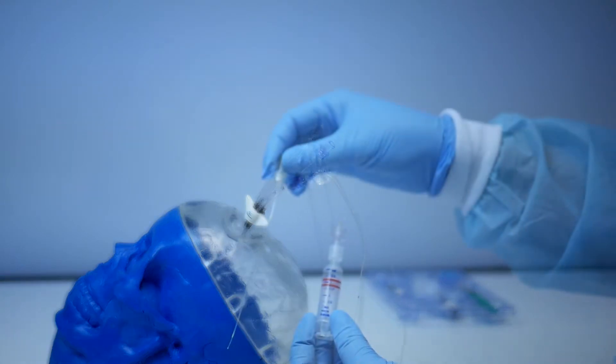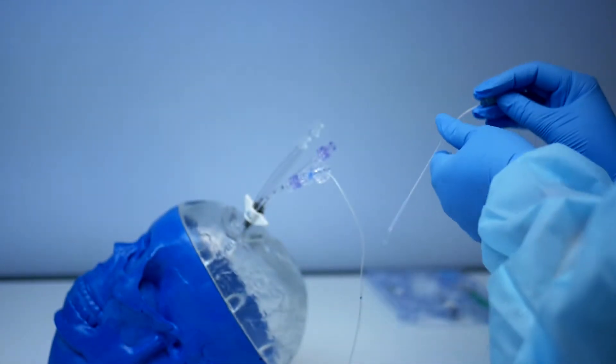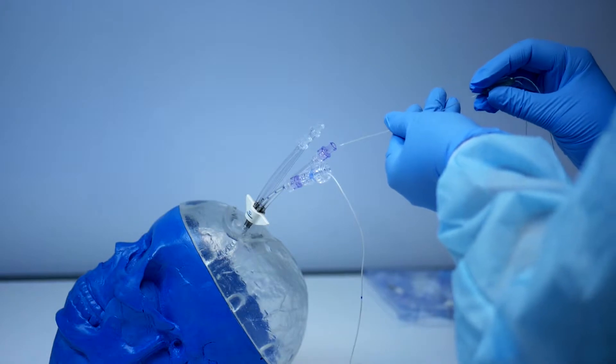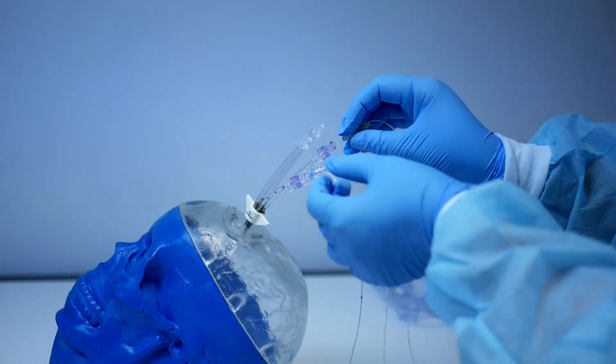Take the microdialysis sensor and insert it into the introducer that you just inserted into the mid-length pigtail. Secure the lure lock connection by turning clockwise.